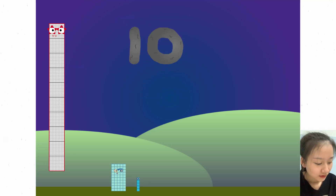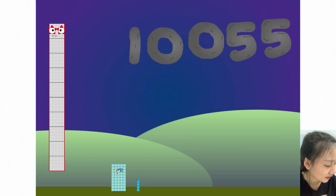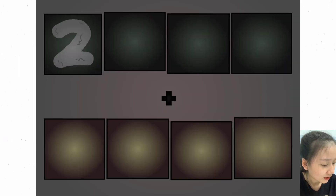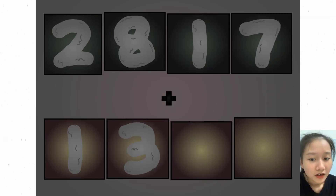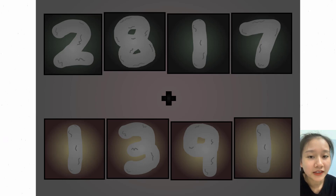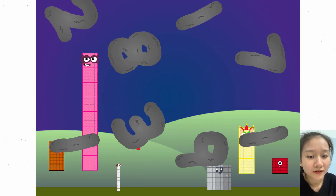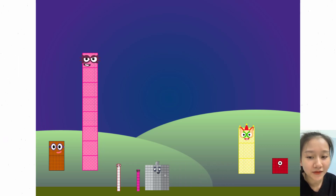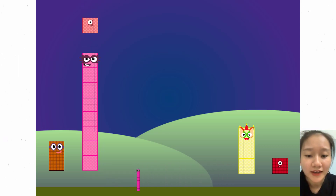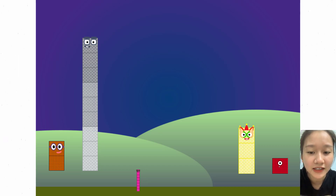Ten thousand fifty-five. Two thousand eight hundred seventeen, plus one thousand and ninety-one, equals ten thousand.